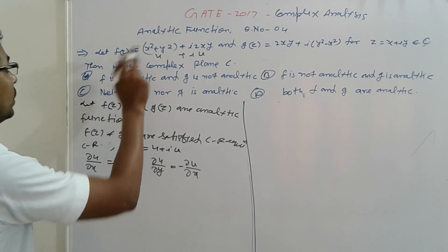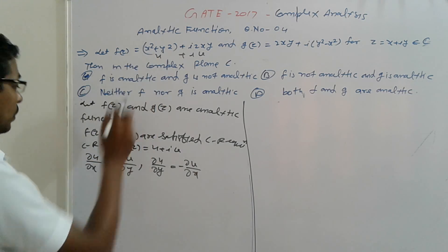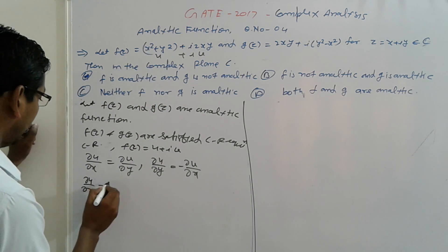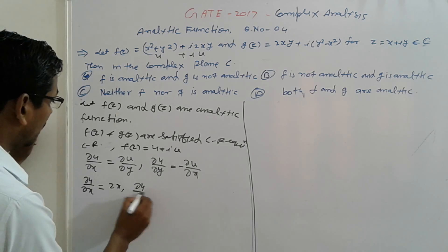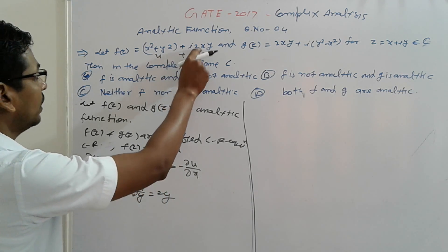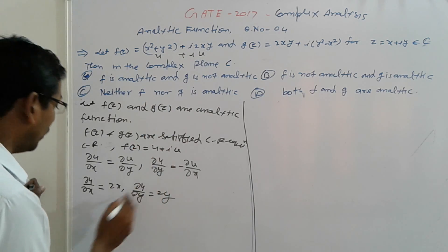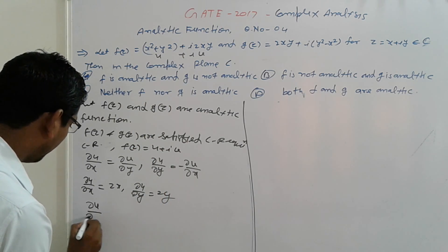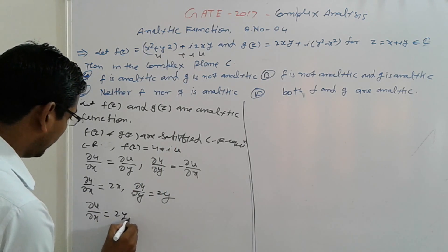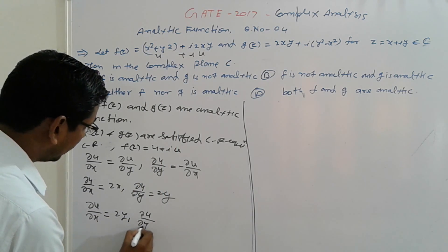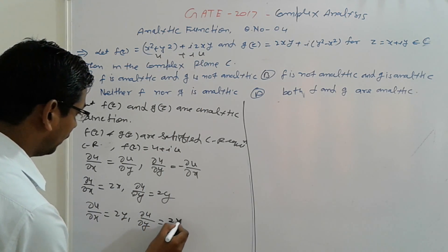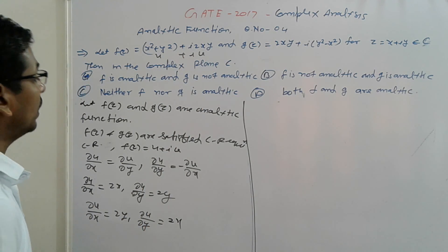What is u? So del u / del x = 2x, del u / del y = 2y — simple. Next, v is here. So del v / del x = 2y, and del v / del y = 2x only.